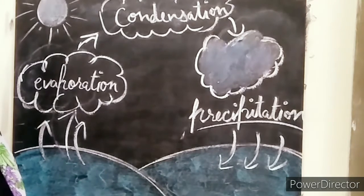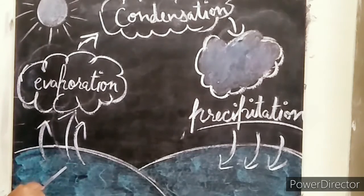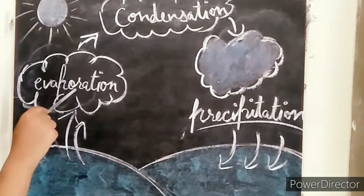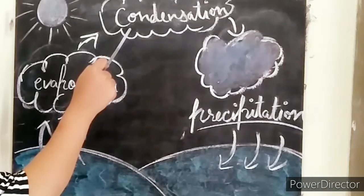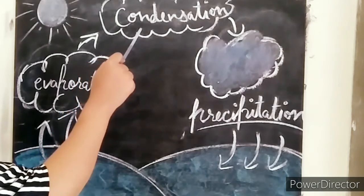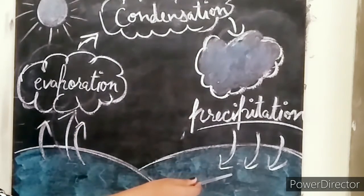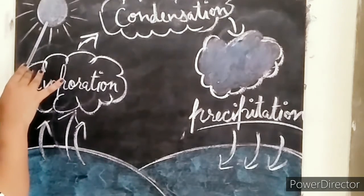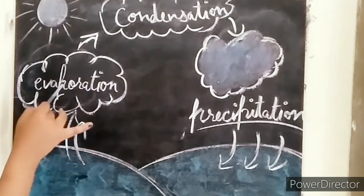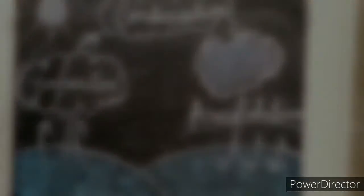In the water cycle, water from bodies like rivers or ponds gets heated up by the sun and changes into water vapors — this process is known as evaporation. After evaporation, the water vapors further change back into water through condensation. This water then forms clouds and falls on the ground or into water bodies, which is known as precipitation.